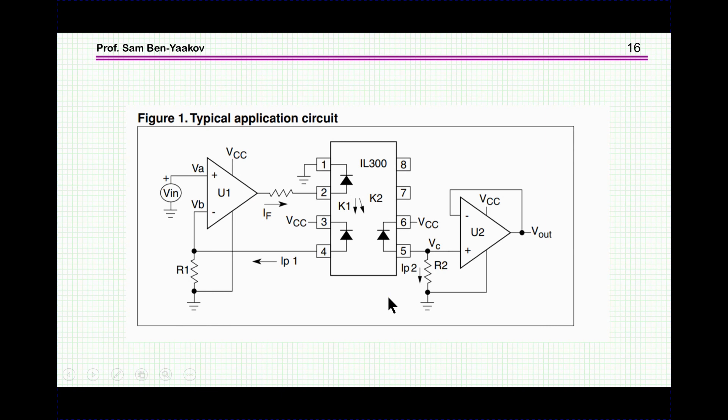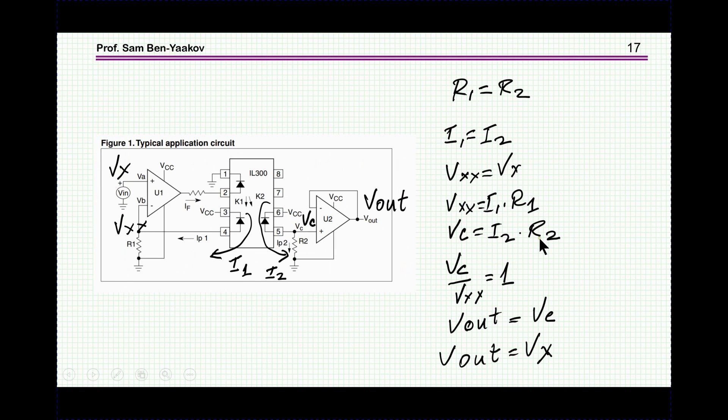Here is a suggestion of how to build an isolated amplifier with this device. What we have here is an amplifier. Here is the LED driven by this amplifier. Then we have one photodiode and then there is another photodiode. And here we have the output. So how does this work? Again, we have here a feedback through the light.